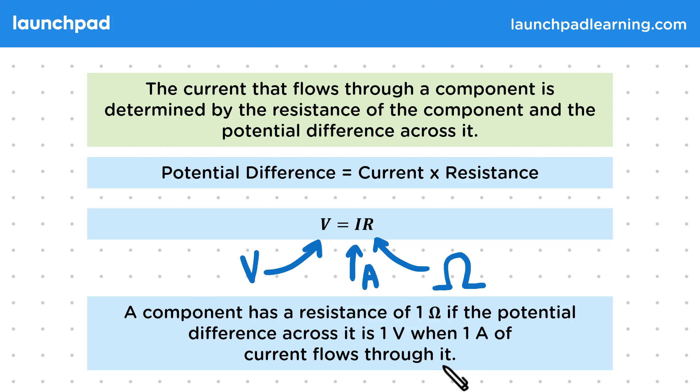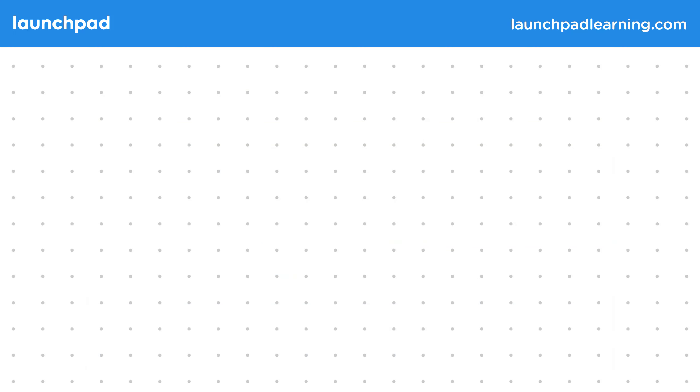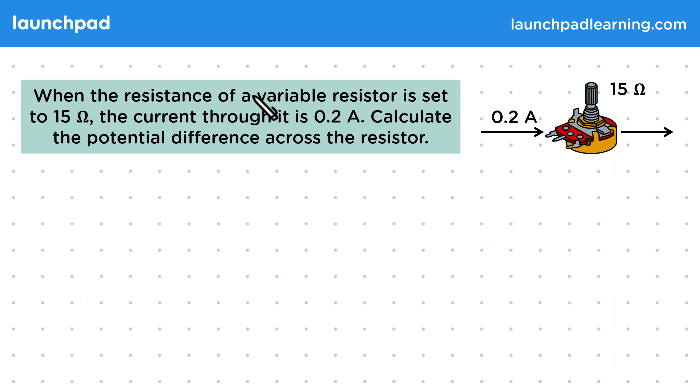Let's have a look at an example using this equation. When the resistance of a variable resistor is set to 15 ohms, the current through it is 0.2 amps. Calculate the potential difference across the resistor.